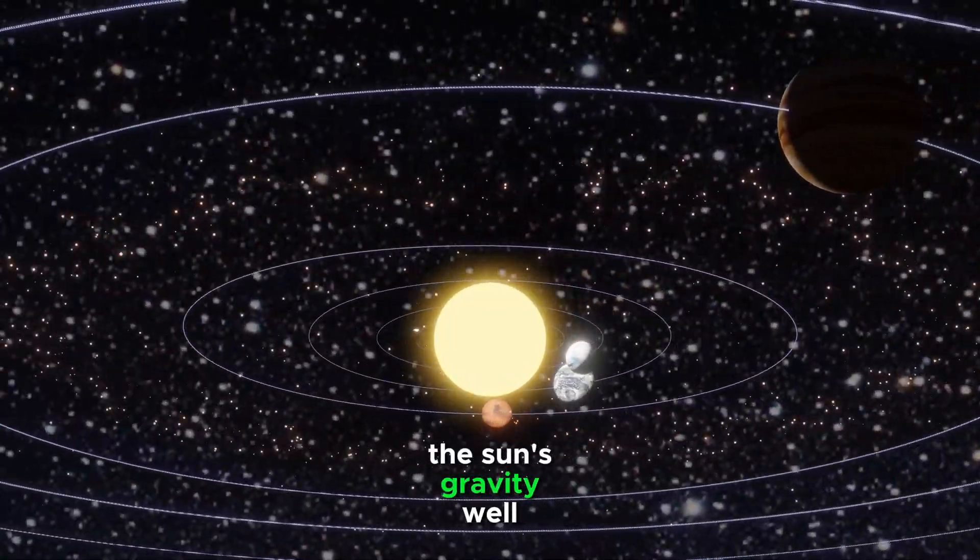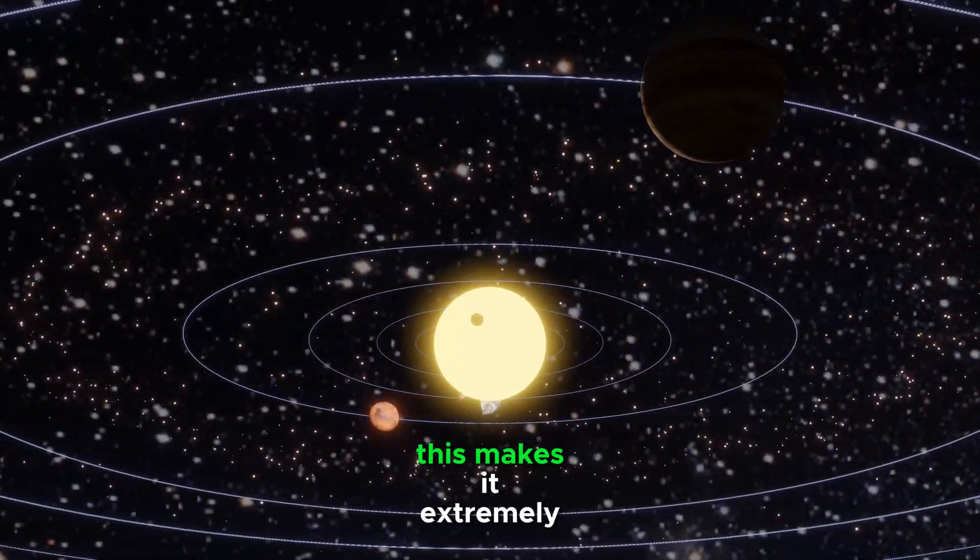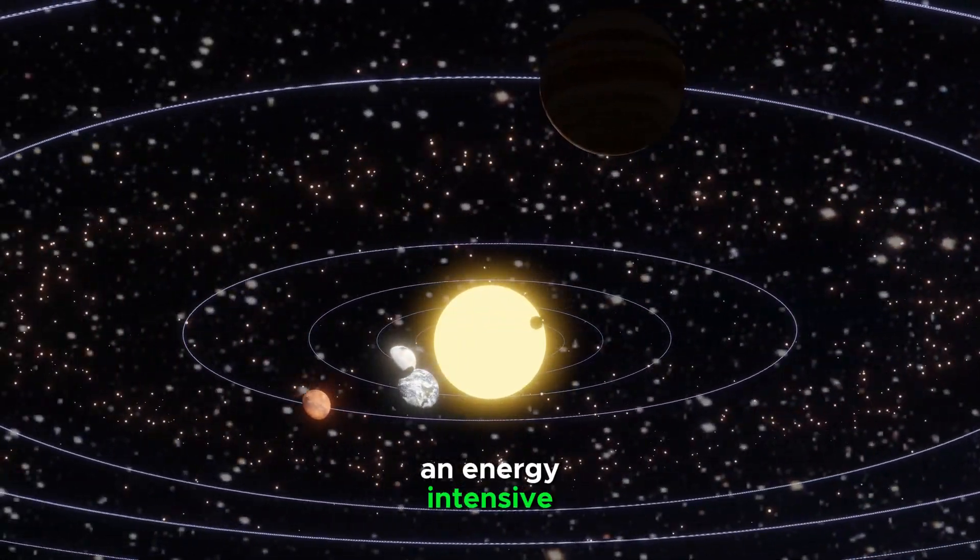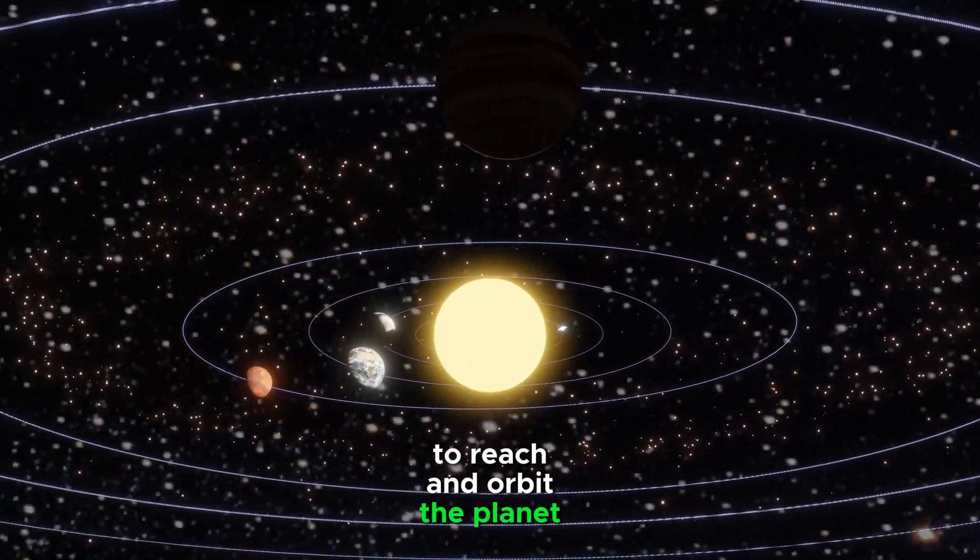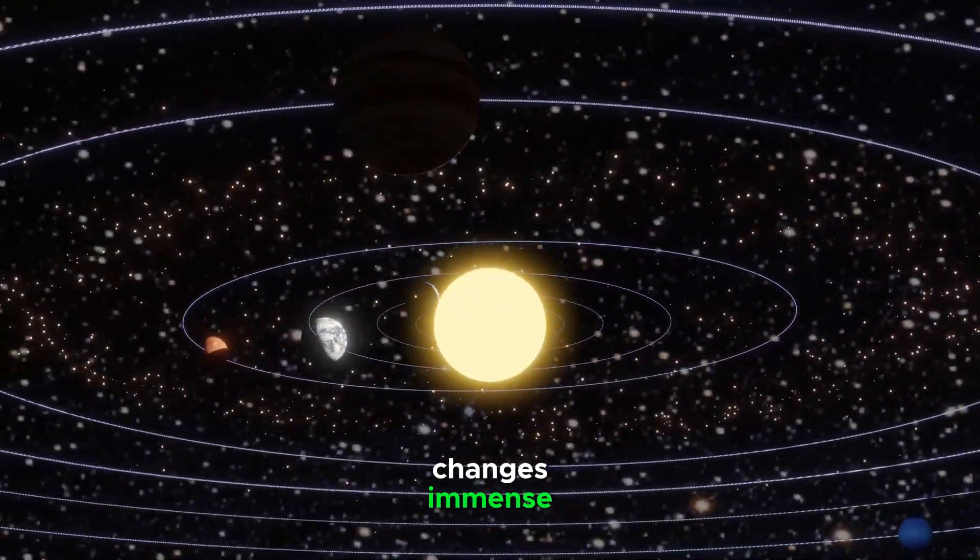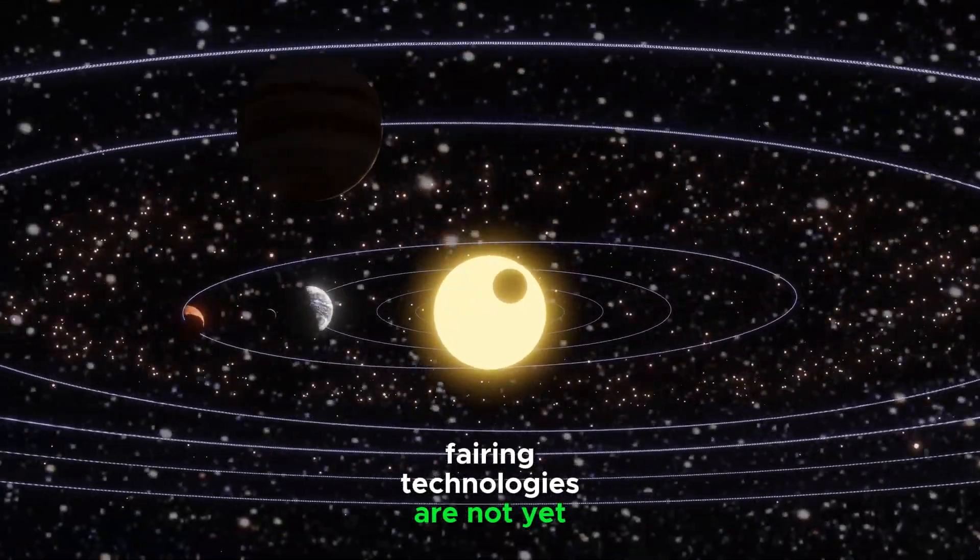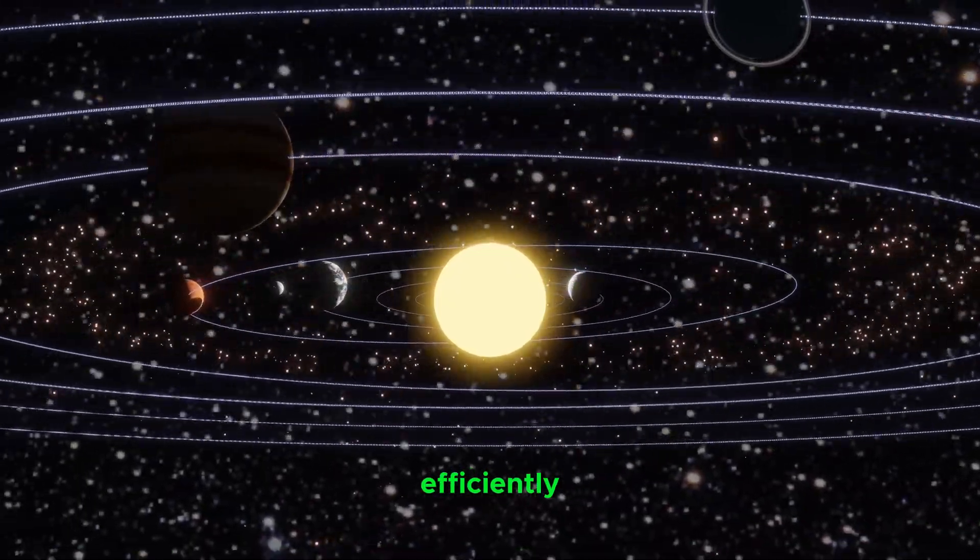The Sun's Gravity Well. Mercury is trapped in the sun's powerful gravity well. This makes it extremely difficult and energy-intensive to reach and orbit the planet. The required velocity change is immense, and our current space-faring technologies are not yet advanced enough to handle it efficiently.